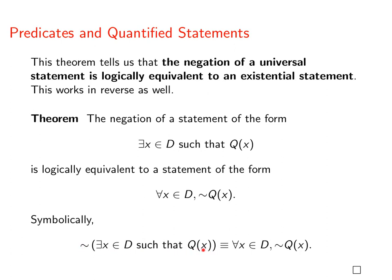That's down here. The negation of the statement there exists x in D such that Q of x is logically equivalent to for all x in D, not Q of x. Okay, that's all for now.